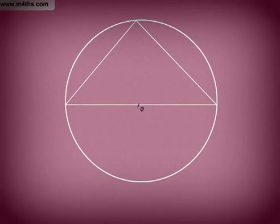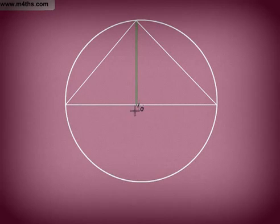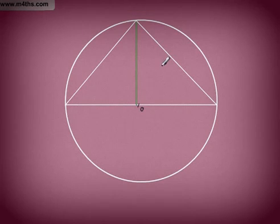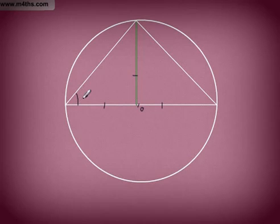We're going to show how that works. So let's get a line. Now that's a radius right there. This right here is going to be a radius, this right here is going to be a radius, and this right here is going to be a radius. So whatever this angle is here, we'll call A, this one is going to be A.